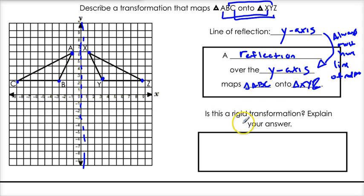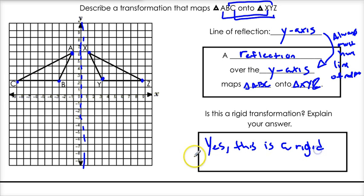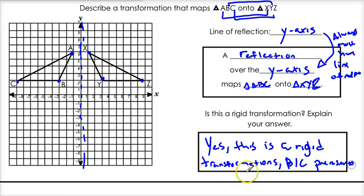The second part of this question: is this a rigid transformation? Yes — this is a rigid transformation because it preserves the distance between points. The distance from A to B is the same as X to Y; that distance between each of the points is preserved.